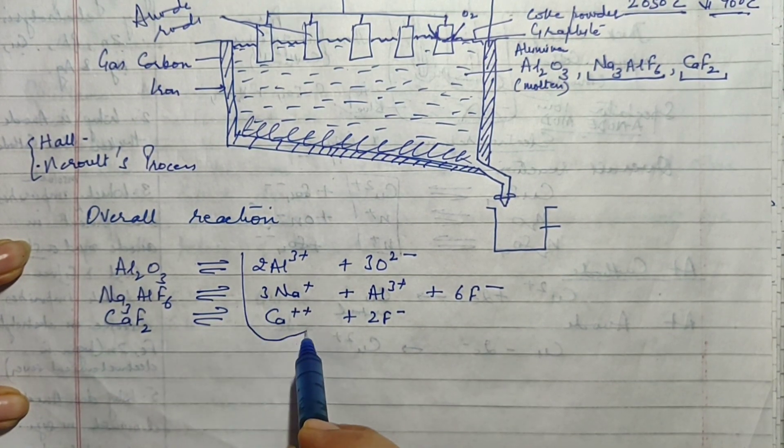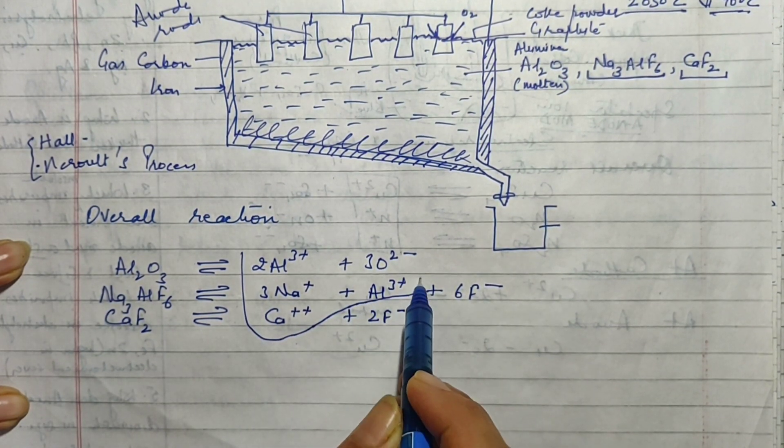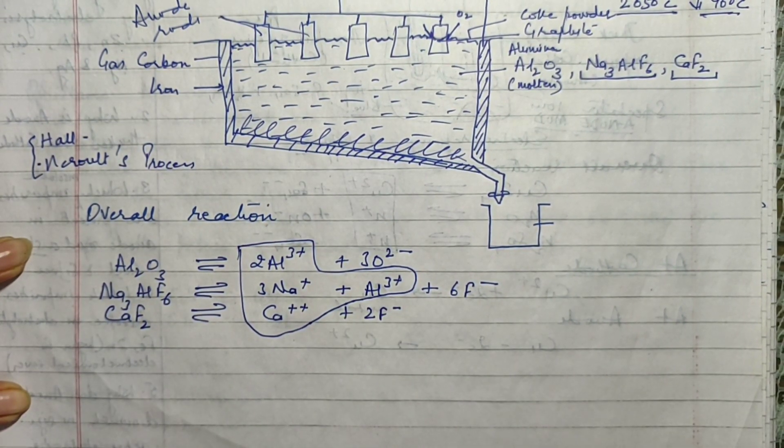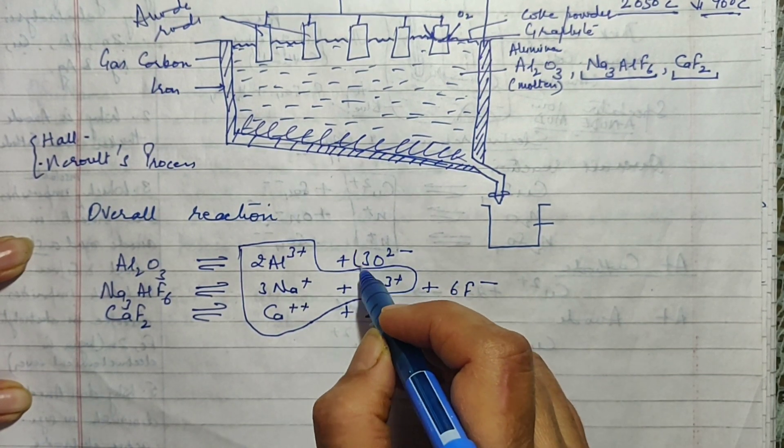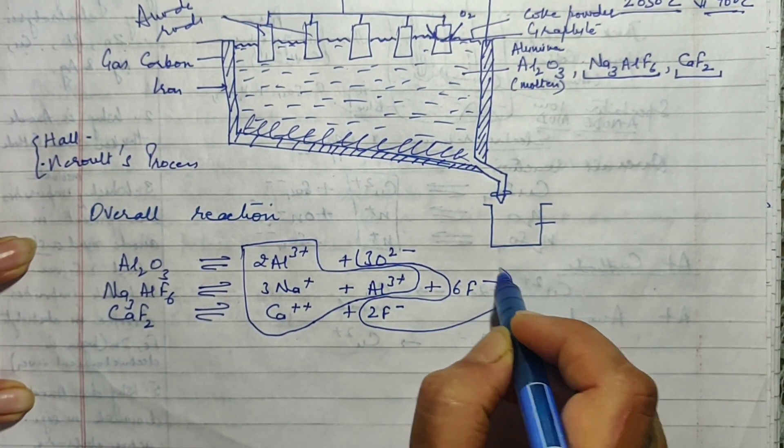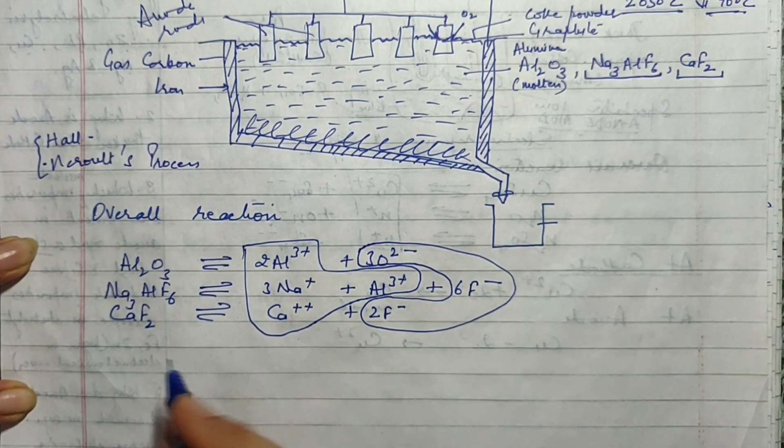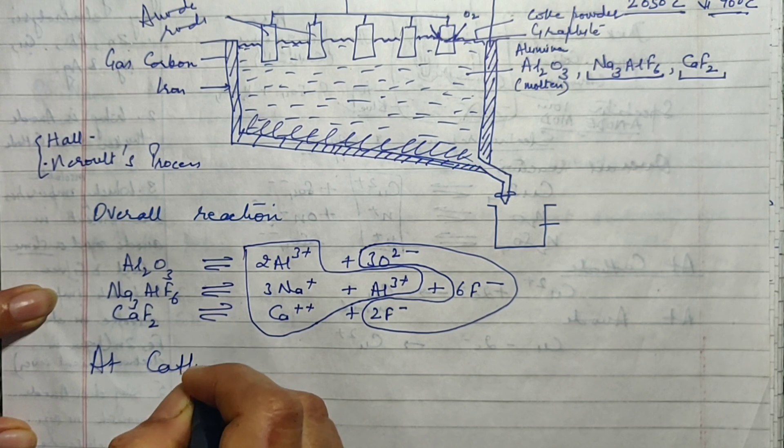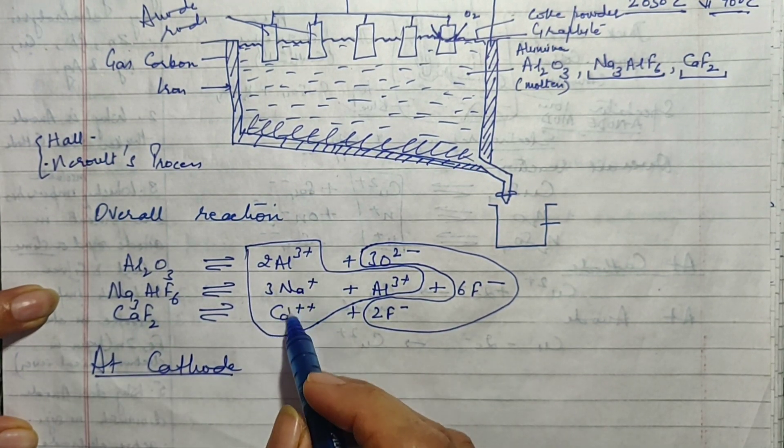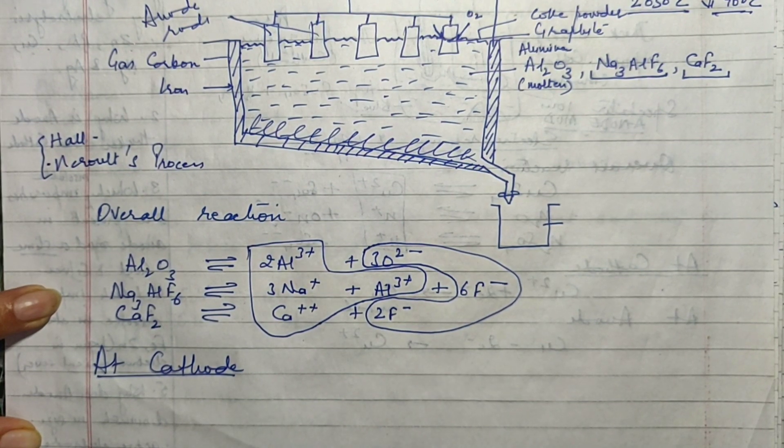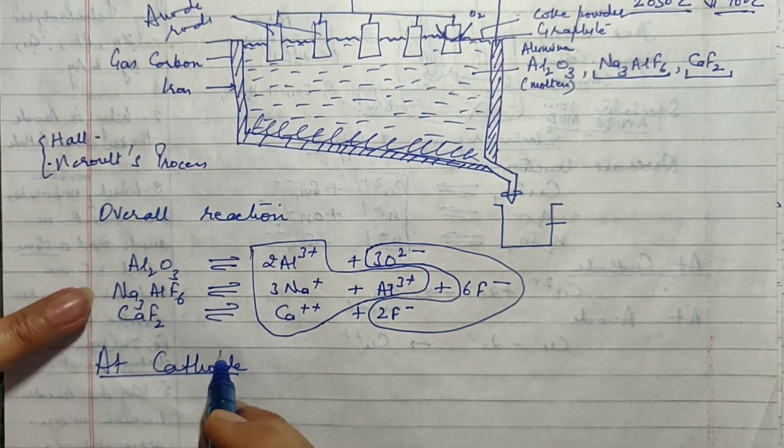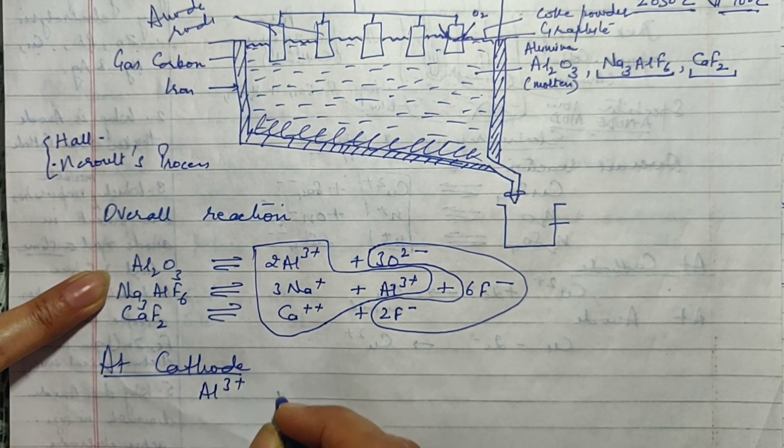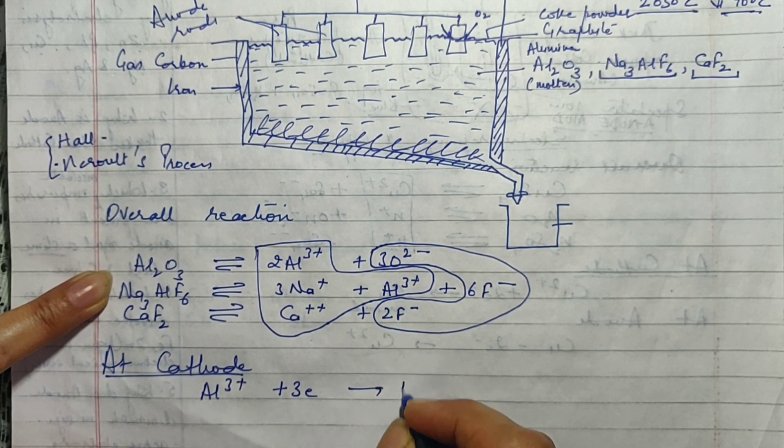Now if you notice there are these positively charged ions which are present in the electrolyte. Aluminium, sodium, calcium and again aluminium. And the negatively charged ions are fluoride and oxygen. Now according to the preferential discharge of ions, out of these what will happen on the cathode? Out of aluminium, sodium and calcium, aluminium happens to be down below in the reactivity series so it has a better chance of discharging over the cathode. So this aluminium accepts three electrons and forms aluminium metal.